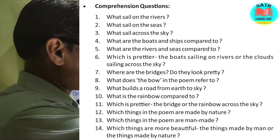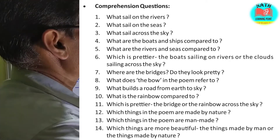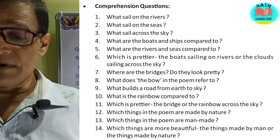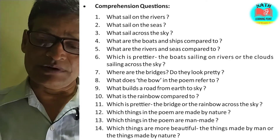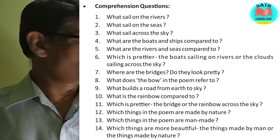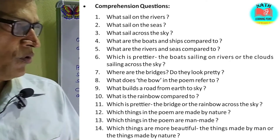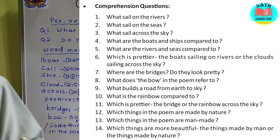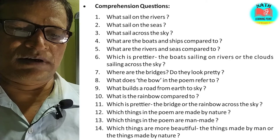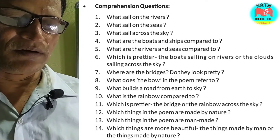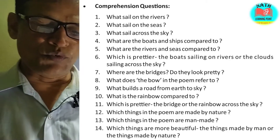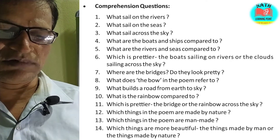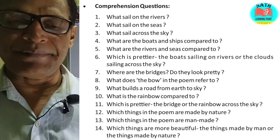Question number 6: Which is prettier — the boats sailing on the rivers or the clouds sailing across the sky? Clouds sailing across the sky look more beautiful than the boats sailing on rivers. Question number 7: Where are the bridges? Do they look pretty? The bridges are on the rivers. Yes, they look pretty. Question number 8: What does the bow in the poem refer to? The bow in the poem refers to the rainbow.